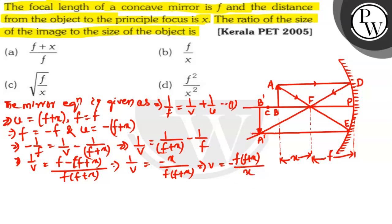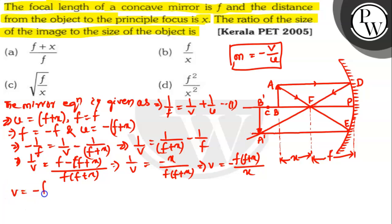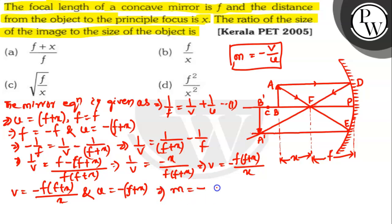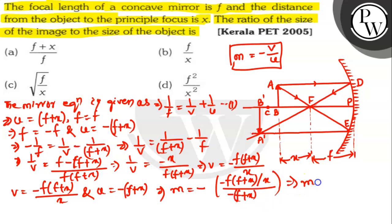We know from the magnification formula, m = −v/u. Substituting v = −f(f + x)/x and u = −(f + x), we get m = −f/x. This is equation 2.